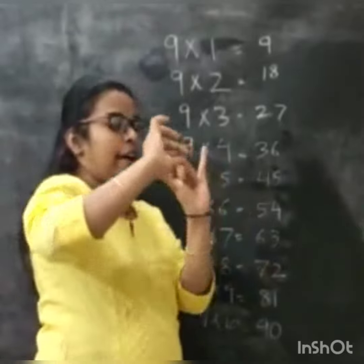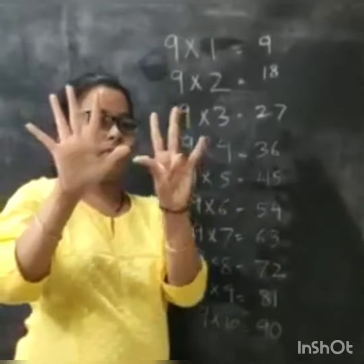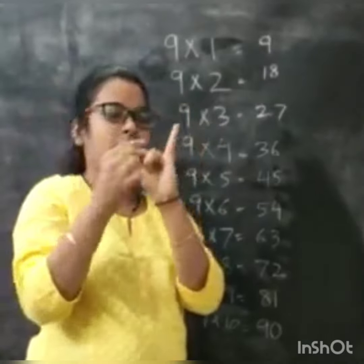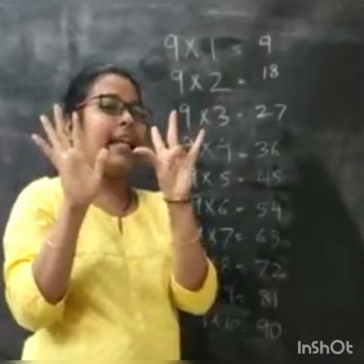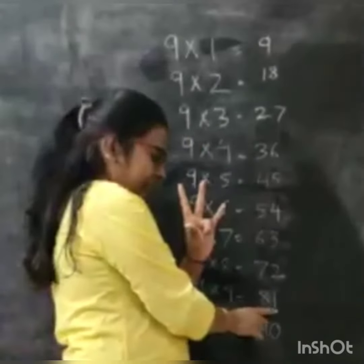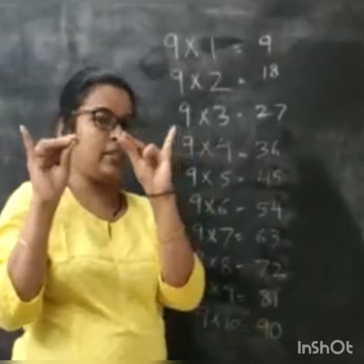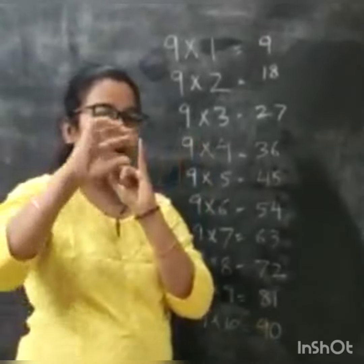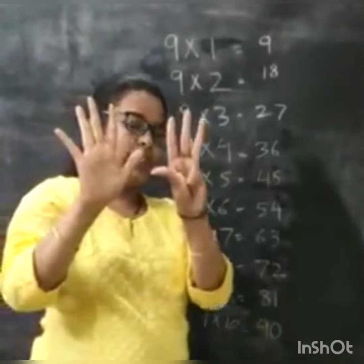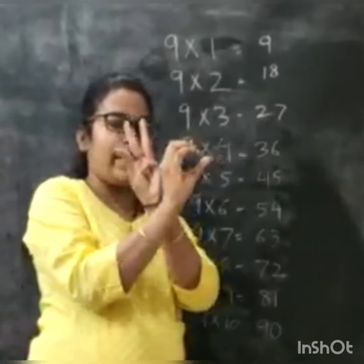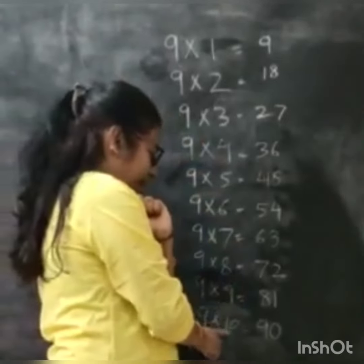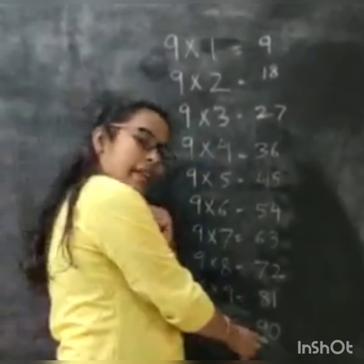Now I will close my tenth finger. How many fingers over here? 9 and here only 0. So 9, 0, 90. 9 times 10 is 90.